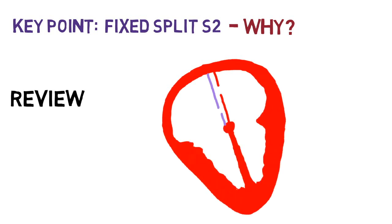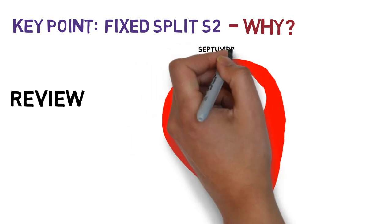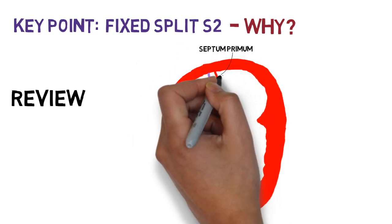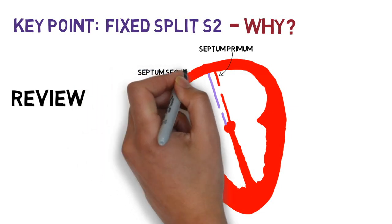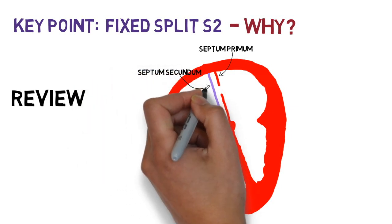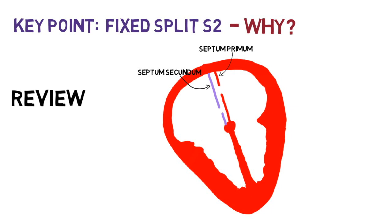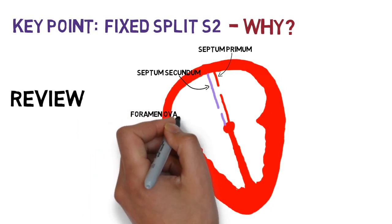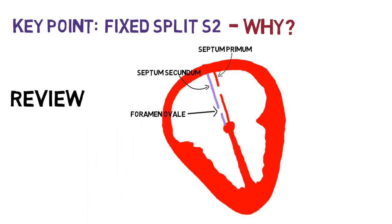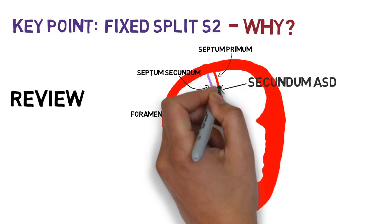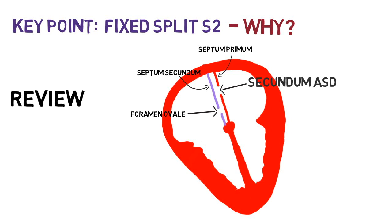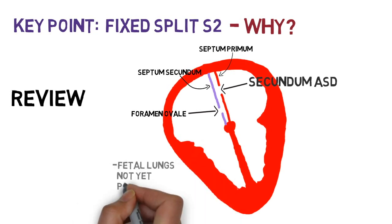Let's start by reviewing the fetal heart in development. This is the septum primum, and you'll notice there is a defect in the middle of it. This is the septum secundum, and just like the septum primum, there's also a defect — this has a name: the foramen ovale. The septum primum defect also has a name: the secundum ASD.